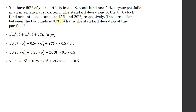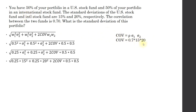Next, we substitute the standard deviations: 15 and 20 for the sigma squareds. Interestingly, we are given the correlation coefficient; however, the formula calls for the covariance. You are given this conversion formula on the CFP exam. To calculate the covariance, take the correlation coefficient and multiply it by the two standard deviations. The correlation coefficient is 0.7, so 0.7 times 15 times 20 gives us a covariance of 210.